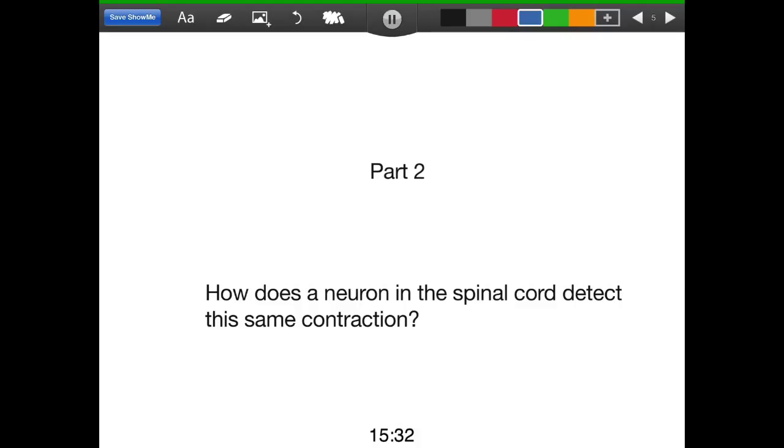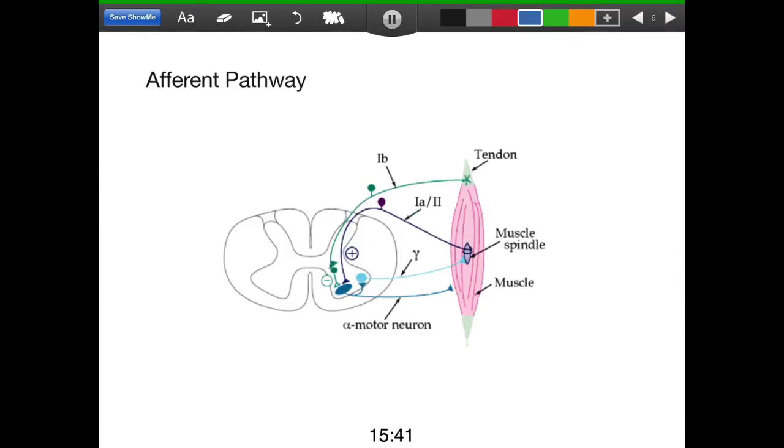Next, what we're going to look at is how this muscle contraction is simultaneously detected by neurons in the spinal cord. This is accomplished by afferent sensory neurons, which are found in muscle spindles and Golgi tendon organs. These afferent neurons encode sensory input about the action of a muscle by sensing the muscle's stretch and contraction, and the more stretching or contraction that occurs, the more these afferent neurons fire.